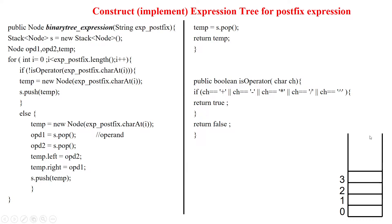Welcome to implementation of expression tree by using the postfix arithmetic expression. Here I am calling the method binary tree expression by passing the postfix arithmetic expression. I will pass 'ab+c*' as the expression. We are passing this string, then we will create the stack for this implementation. Here we are creating the nodes: operand 1, operand 2, and temporary node.